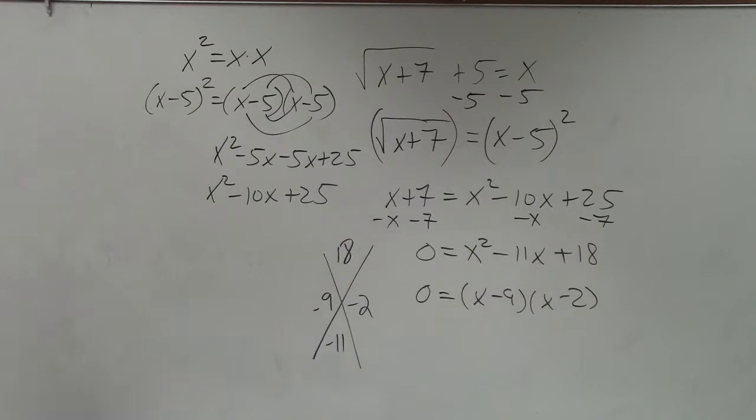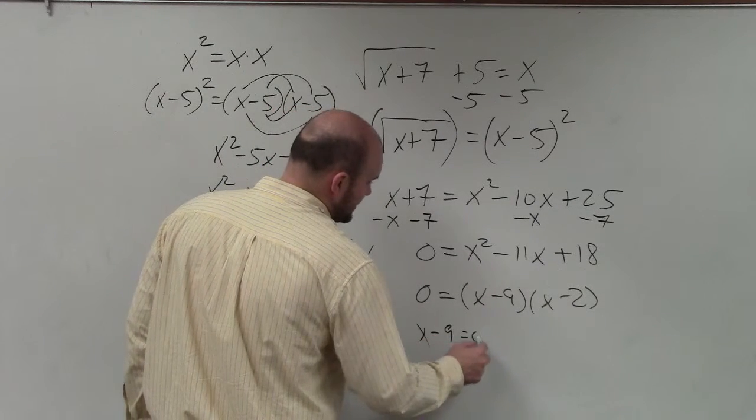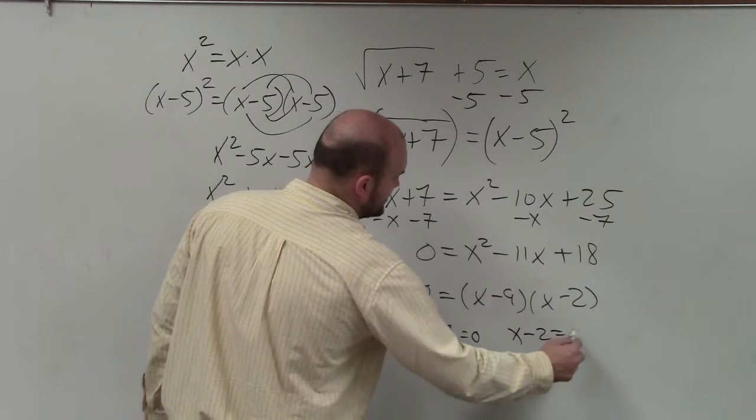Now we apply the zero product property, and we have x minus 9 equals 0, and x minus 2 equals 0.